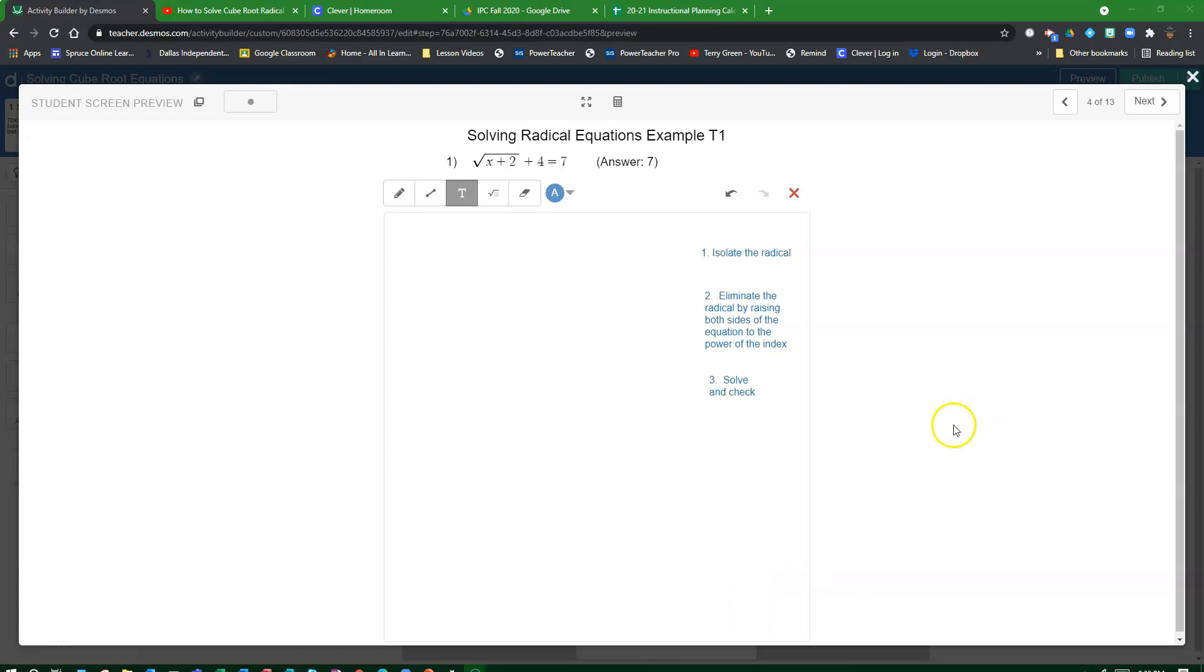Okay, in this example, we want to solve the radical equation square root of x plus 2 plus 4 equals 7.